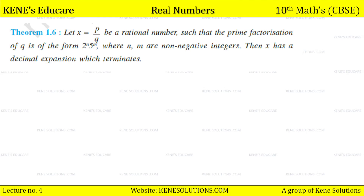Let x = p upon q be a rational number such that the prime factorization of q is of the form 2 to the power n × 5 to the power m, where n and m are non-negative integers. Then x has a decimal expansion which terminates.